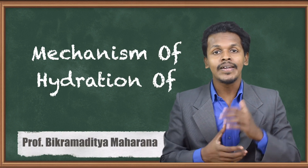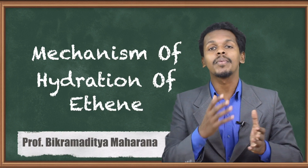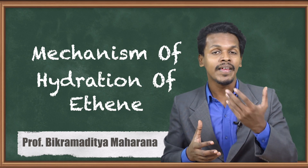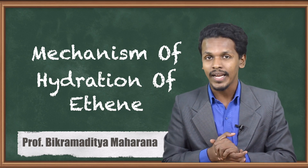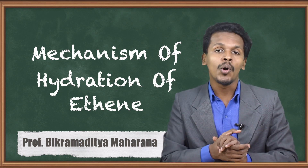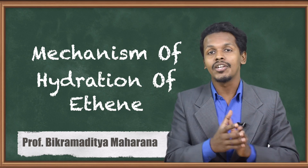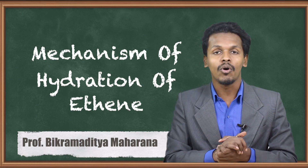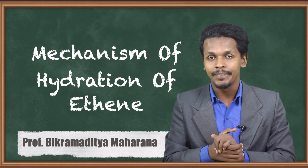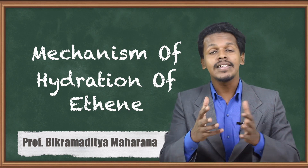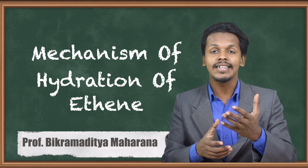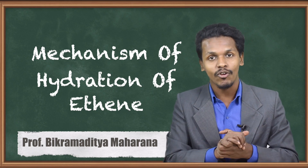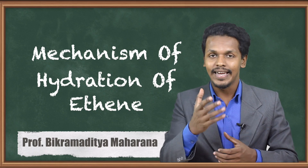In the previous lecture we understood how we can prepare primary alcohol by using an alkene and by using diborane. So now we are again talking about the hydration of alkene — specifically the mechanism of hydration of alkene. Let us understand the mechanism behind it and how the reaction works and how we can obtain an alcohol. Let's get started.